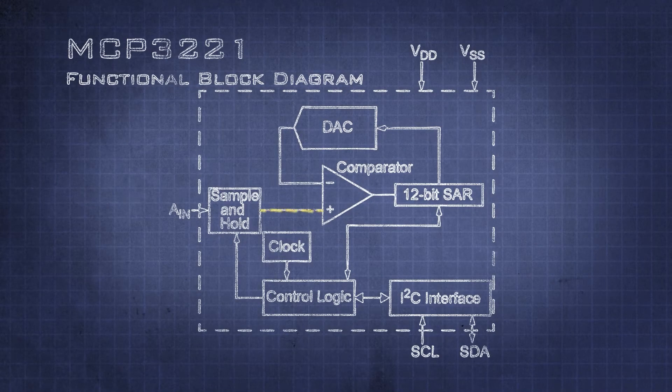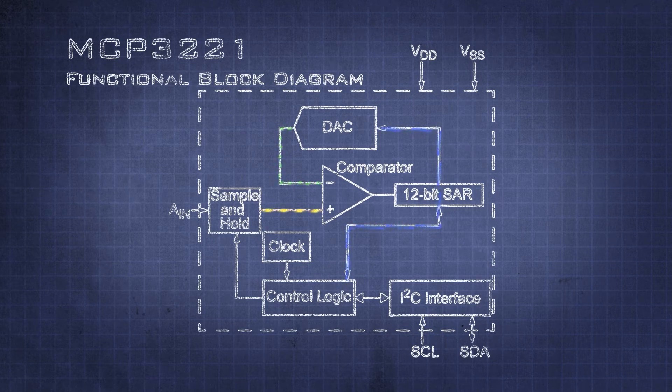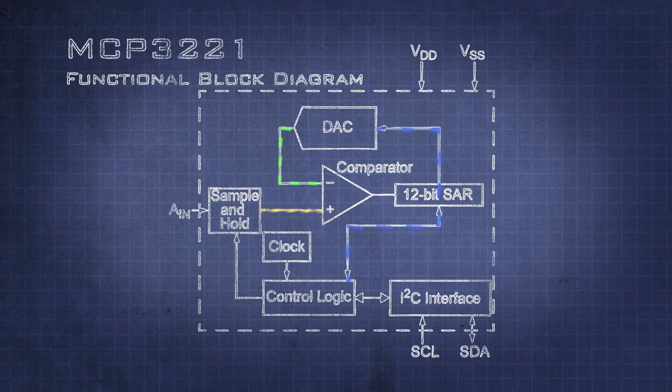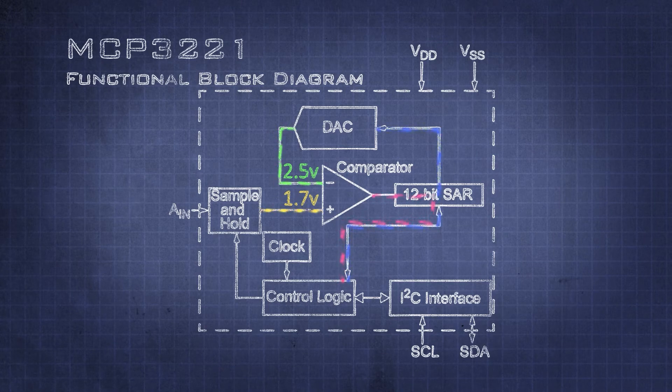At start of conversion and first clock pulse, the MSB is set, thus outputting one half DAC reference voltage. For example, if our system uses 5 volts, then our DAC is now outputting two and a half volts.